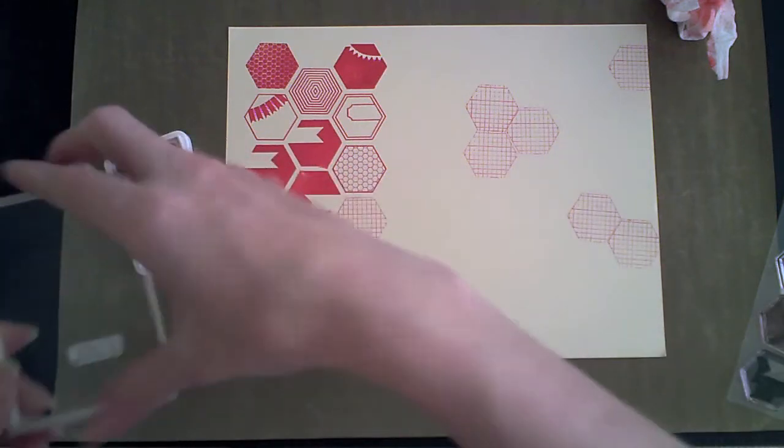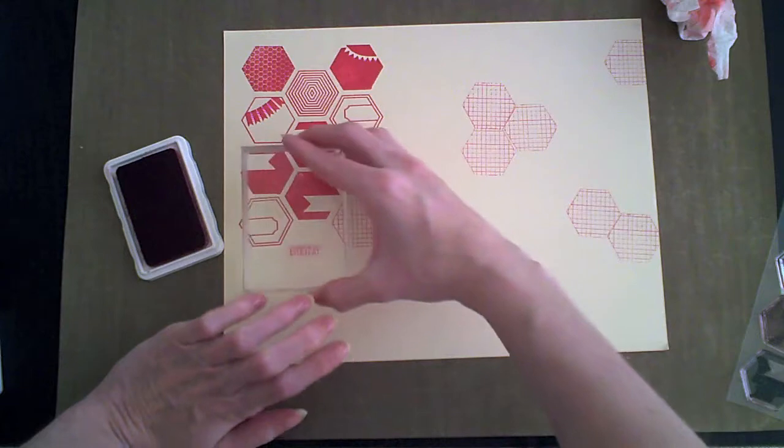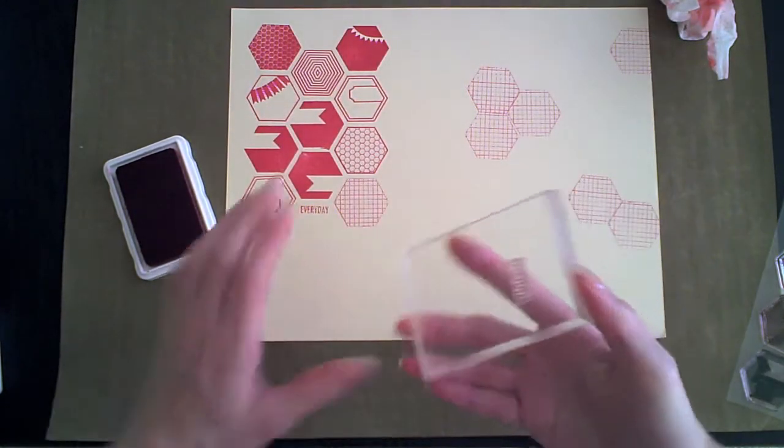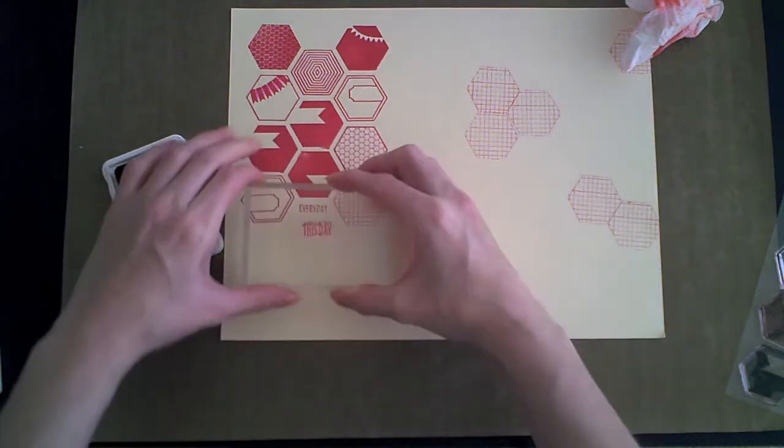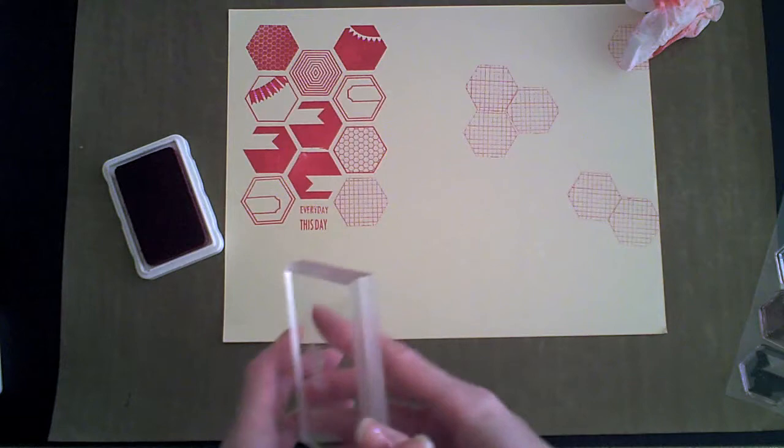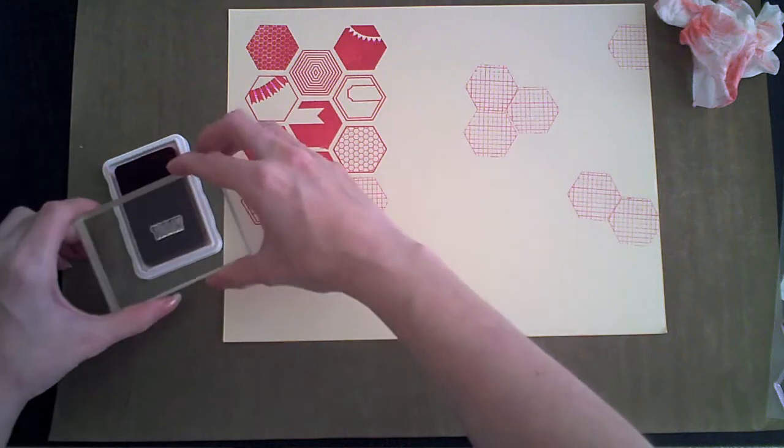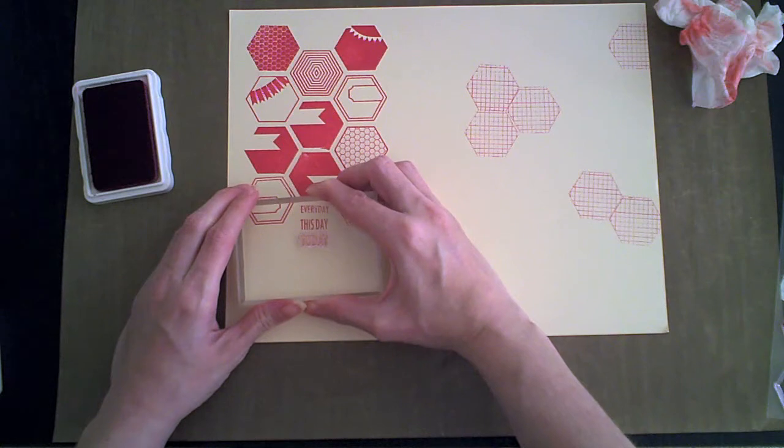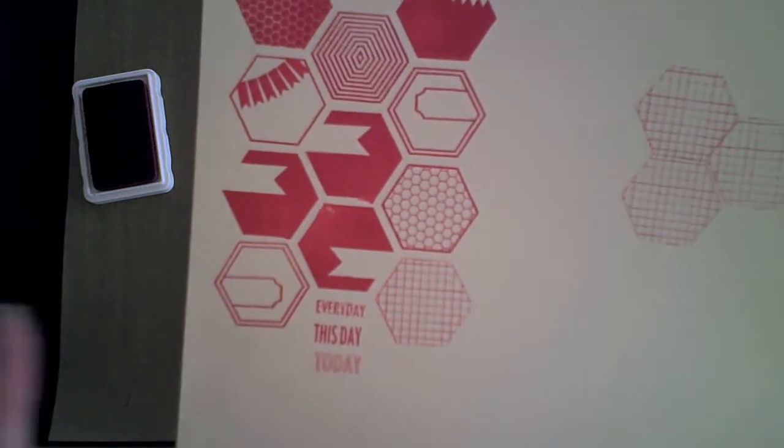And the first one is every day and it has a distressed look to it. And the second one says this day and it's bold, very simple, classic font. And the last one says today and it's an outline stamp. So you can stamp as is or color inside. And I'm sure you can find lots of more creative ways to use it.